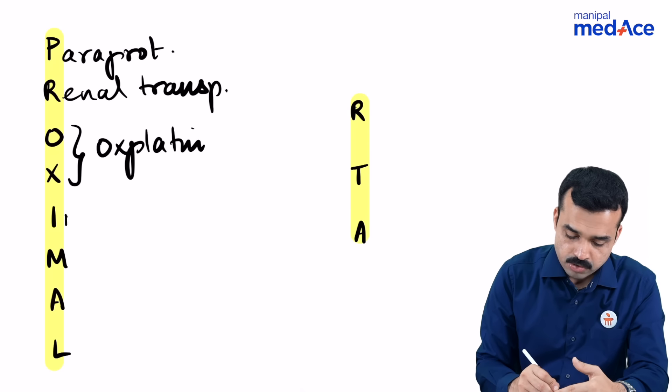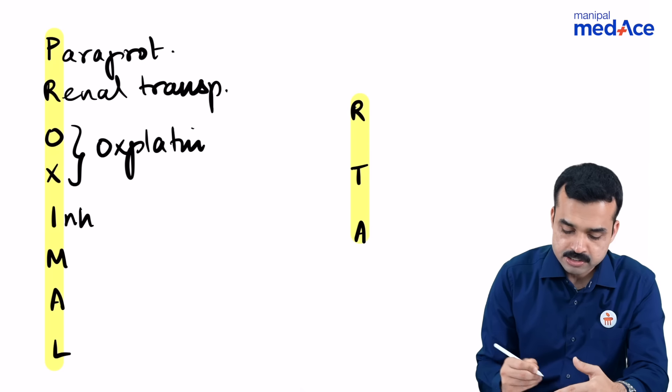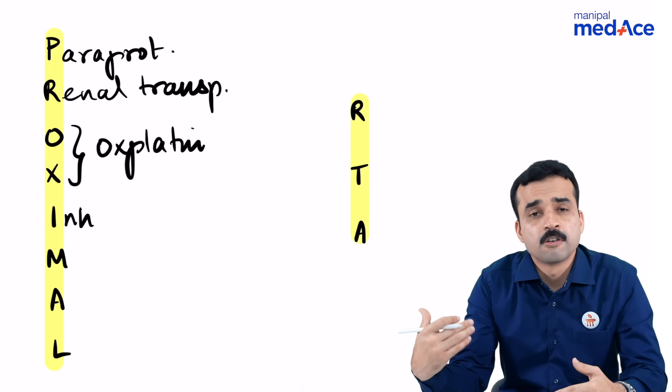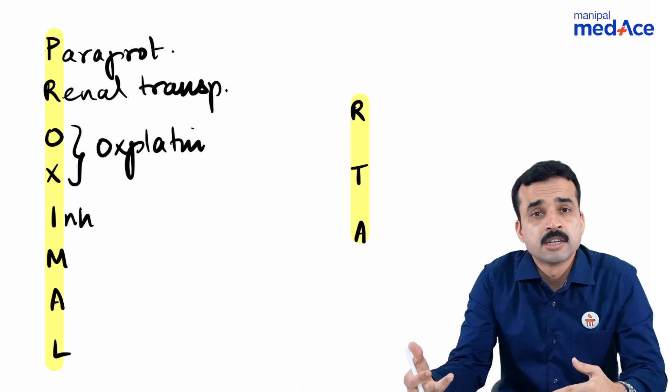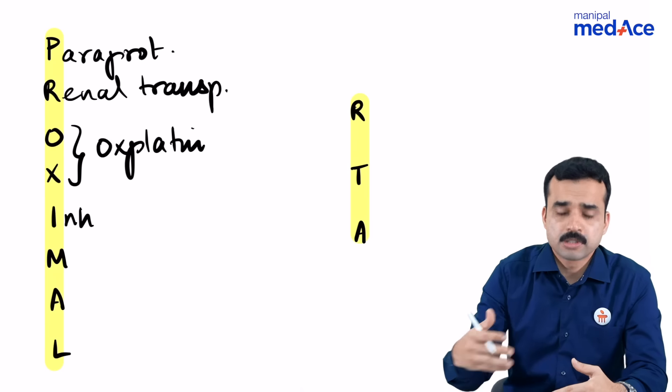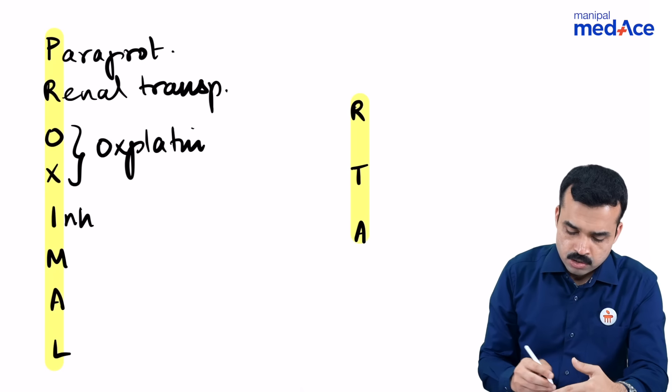I stands for inherited causes like galactosemia, hereditary fructosemia, Wilson's disease, and Lowe's syndrome and so on.